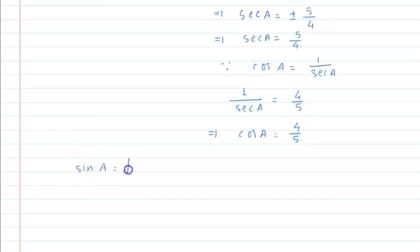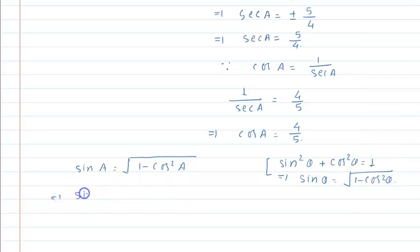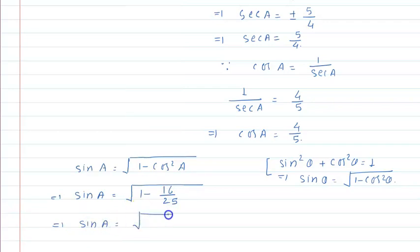We know that sin A is equal to under the root of 1 minus cos squared A. This comes from the identity sin squared theta plus cos squared theta is equal to 1. Substituting cos A equals 4/5, we get sin A equals under the root of 1 minus 16/25, which equals under the root of 9/25. So sin A is equal to 3/5.